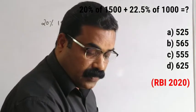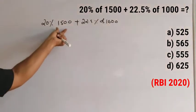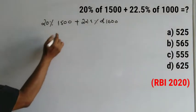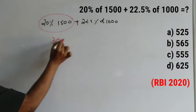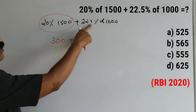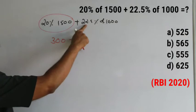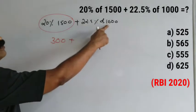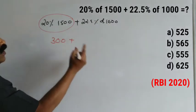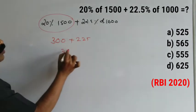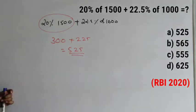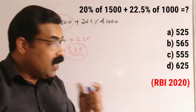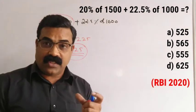20% of 1500: you need not do much. 10% of 1500 is 150, so 20% of 1500 will be equal to 300. Now 22.5% of 1000: double of 22.5 is 45, so 45% of 1000 will be 450, and 22.5% will be half of 450, that is 225. When you add, you get 525. Without solving much, you got the answer 525, and from the given options you can directly write the answer.